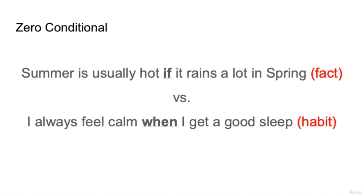You might wonder when to use if and when to use when for the zero conditional. For if, it's generally describing a fact. So: summer is usually hot, if it rains a lot in spring — these are two facts. For when: I always feel calm when I get a good sleep. This is describing a habit, so usually when we have a habit, when is the appropriate choice.